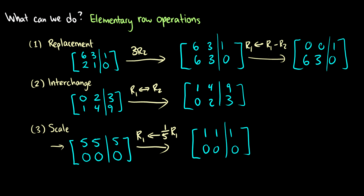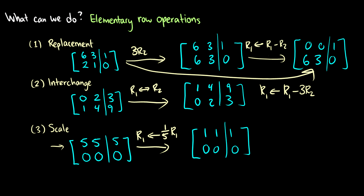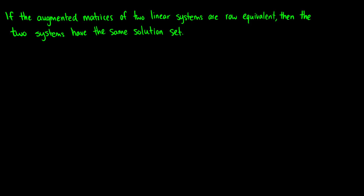Replacement does this all in one step: row 1 becomes row 1 minus 3 times row 2. For the first couple of videos I'll show all these steps explicitly, but after that it should be easy to do in your head. These are elementary row operations — you can do any of them to a matrix and preserve its solution set. If the augmented matrices of two linear systems are row equivalent, then the two systems have the same solution set.